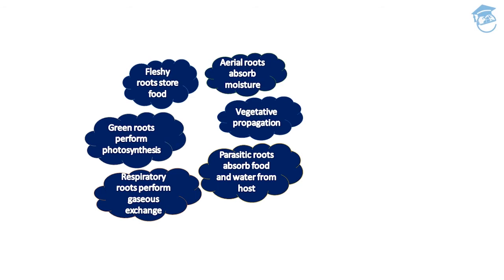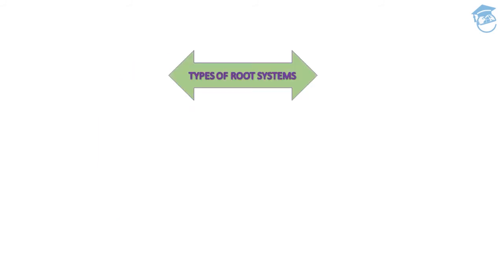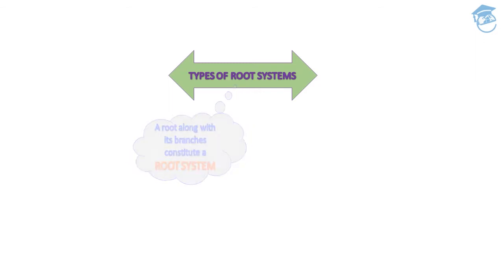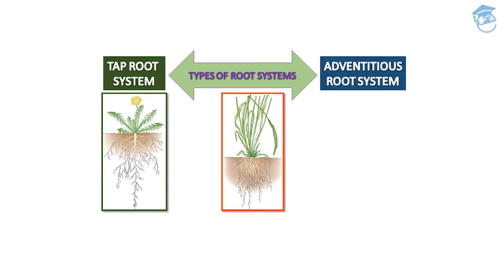Now let's look at the types of root system. A root along with its branches constitutes a root system. First is the tap root system and second is the adventitious root system. In tap root, one primary root is present with lateral branches. In the adventitious root system there is no primary root, no secondary root, and no tertiary root.